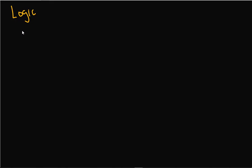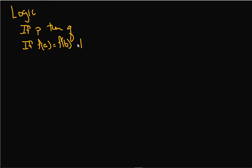Let's talk a little bit about logic. In mathematics we often have statements like this: If P, then Q. We just had an example of that — we were talking about one-to-one functions, and we had: if F of A is equal to F of B, then A must equal B. So that's of this form: if P, then Q. This would be P, and this would be Q.